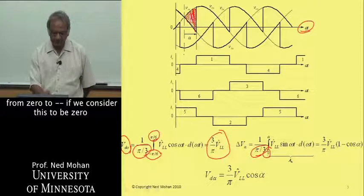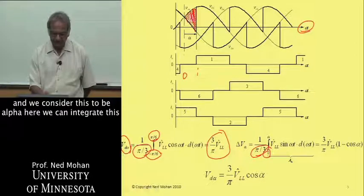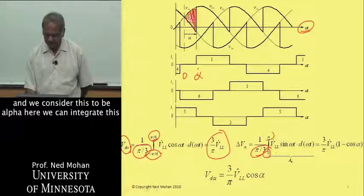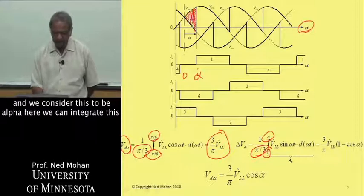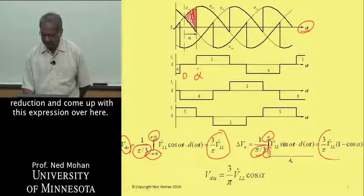So many volt radians are reduced every 60 degrees. So we can obtain that by integrating this waveform. If we consider this to be 0 and we consider this to be alpha here, we can integrate this reduction and come up with this expression over here.